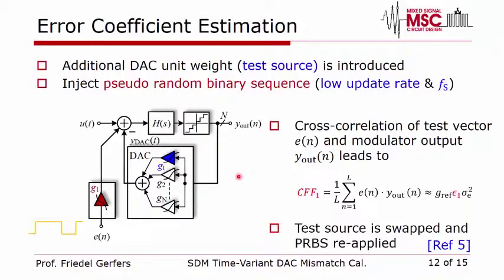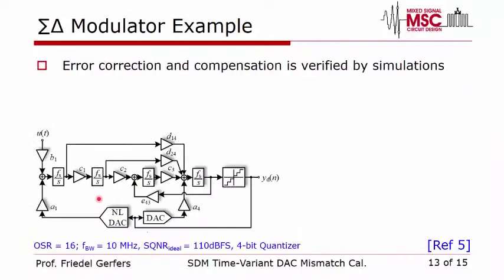We repeat this for each cell: after the first cell is measured we swap it back in, then use the second cell as the PRBS source and analyze the output. This constitutes one full iteration, and we run a few iterations to settle to the best performance.